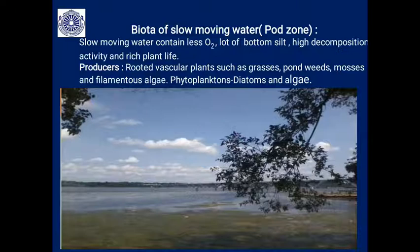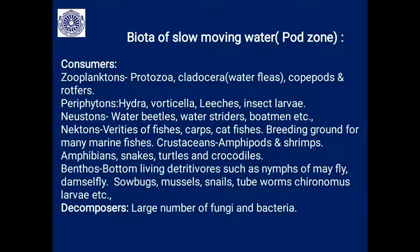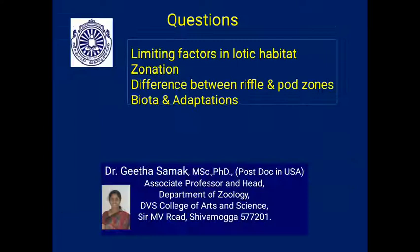The biota of the slow-moving pool zone is almost similar to that of a lake. Producers are rooted vascular plants, submerged plants, and phytoplankton. Consumers include zooplankton, periphyton, neuston, and nekton — all discussed in the lentic habitat. Expected exam questions from this topic include: limiting factors of lotic habitat, zonation, differences between riffle/fast-moving and slow-moving water, and biota and their adaptations.